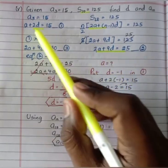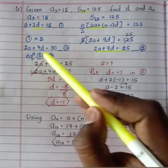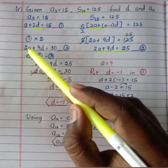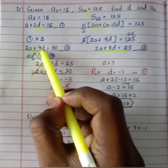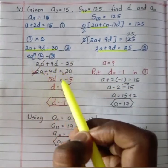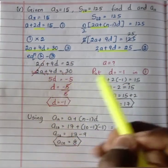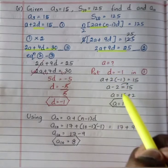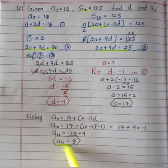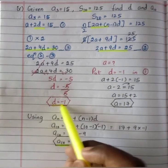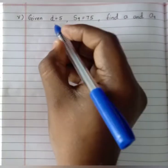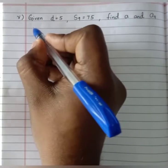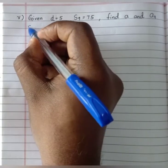Express the given conditions as two equations, solve for a and d, then use those values to find the required term. Making any one variable have the same coefficient allows you to subtract or add to eliminate it. Now moving to question number 5.